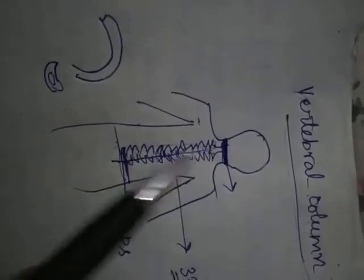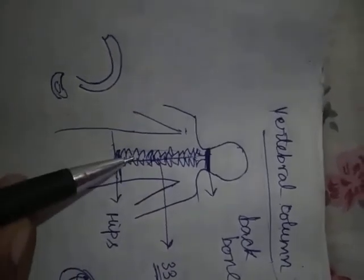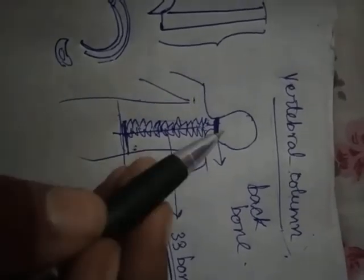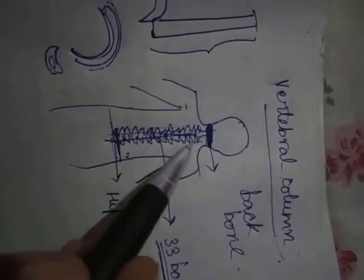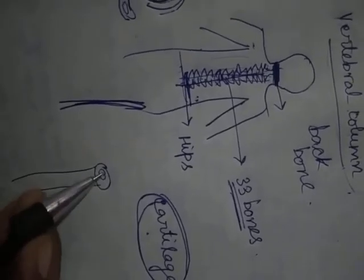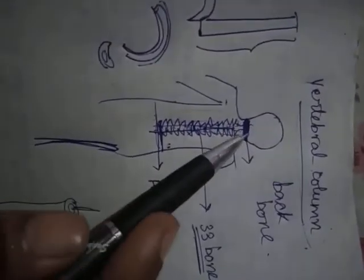This vertebral column is also called the backbone, as it extends along the back portion of our body. The vertebral column is very flexible — it can easily bend. In general it is straight and elongated, but it can also bend, and for this reason we can easily bend our back. The function of the vertebral column is to support the head region, and in between the vertebral column there is a cavity or channel through which the spinal cord is present.